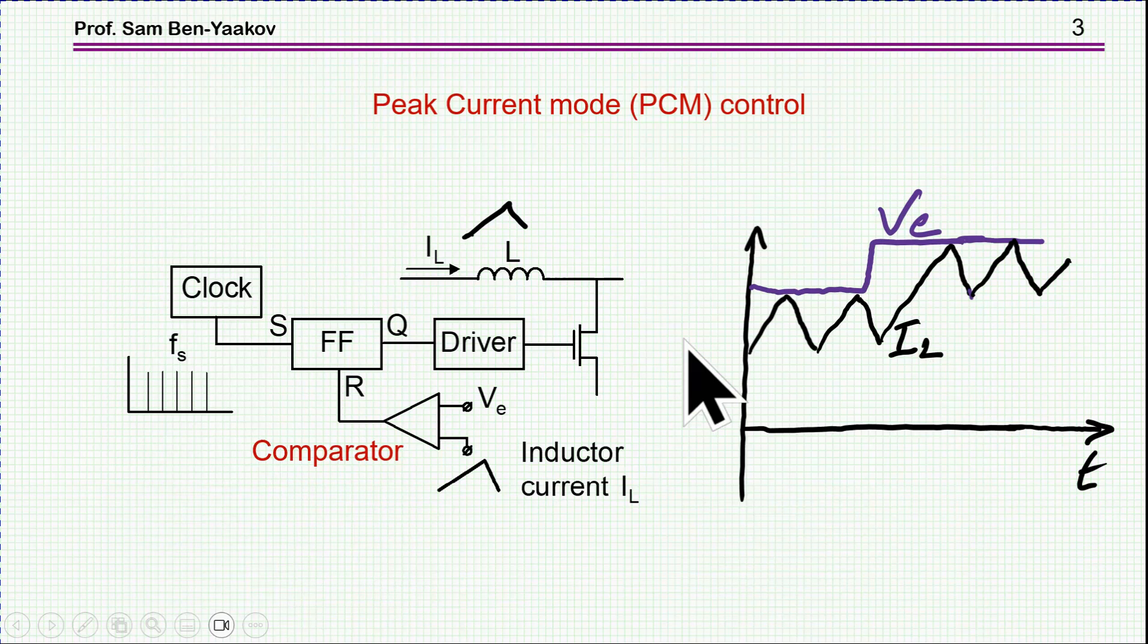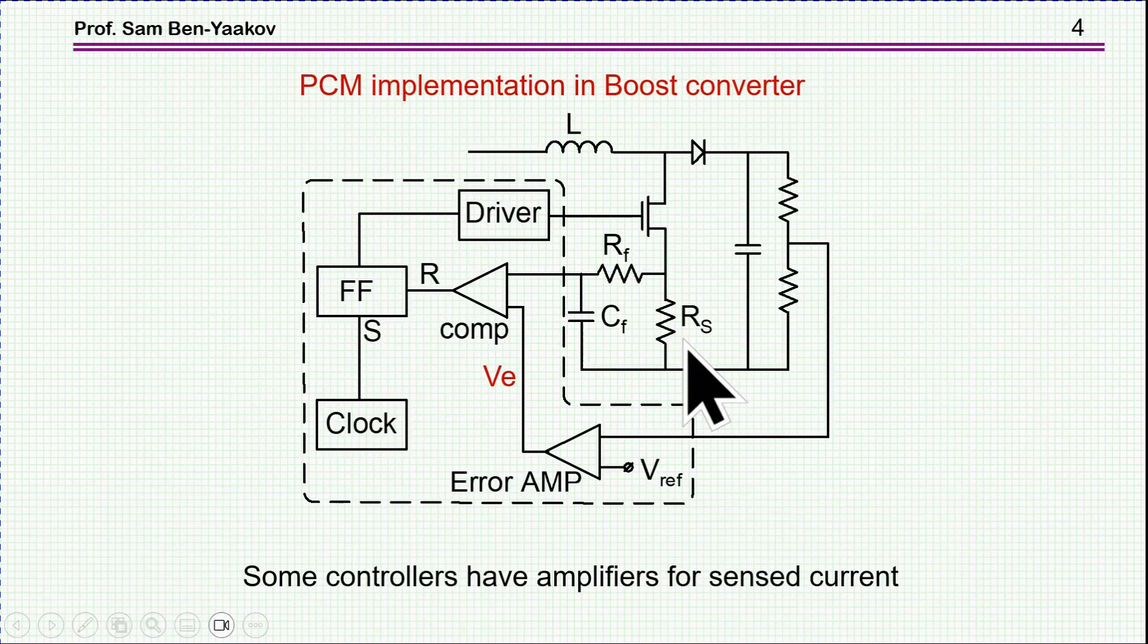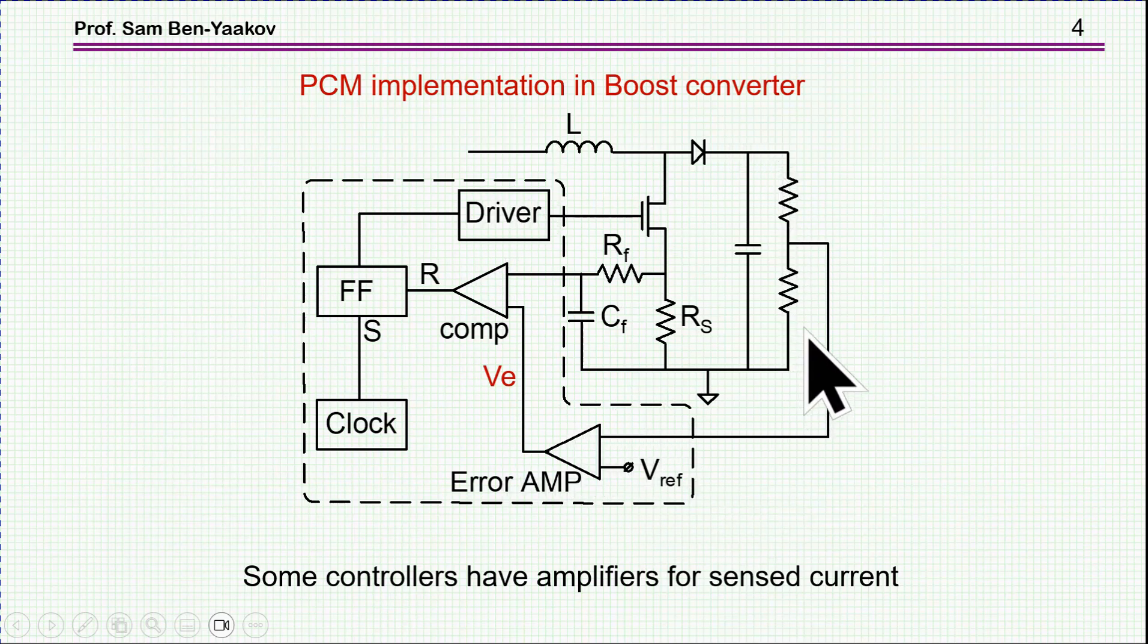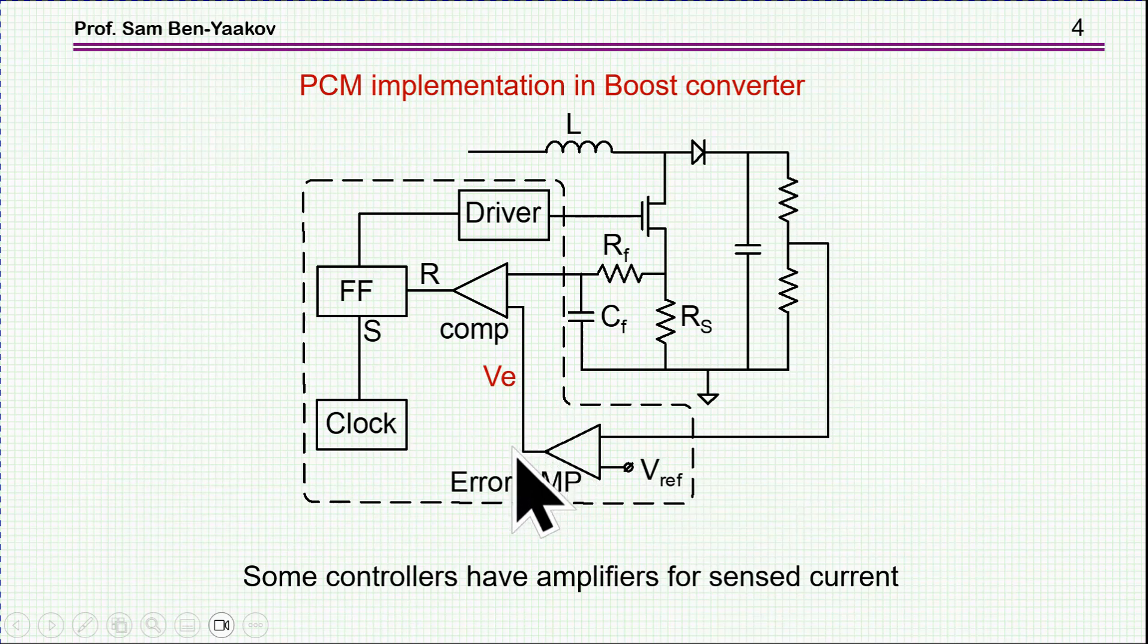So this is the basic operation of peak current mode. Now in a real system, we have an external loop, as it is called. That is, we have an internal current loop, and then we have an external loop, in which we sense the output or part of the output, compare it to a reference, then we might have here phase compensation, and the output of this amplifier is now this V sub E that the current is following. Now, this control method has many benefits.